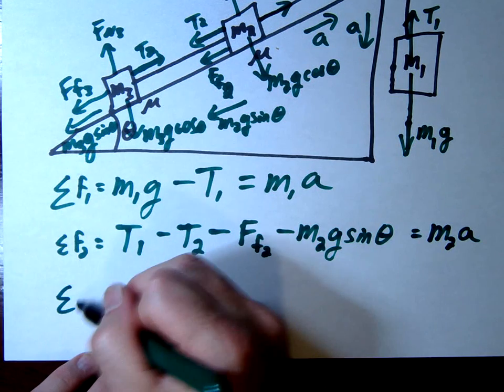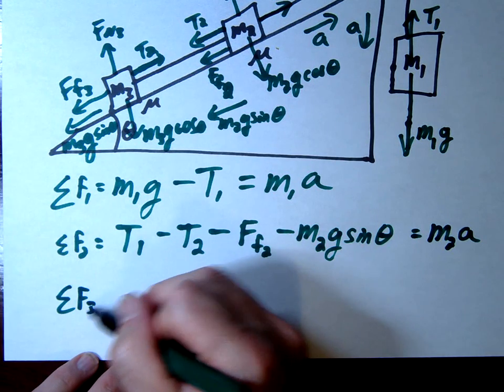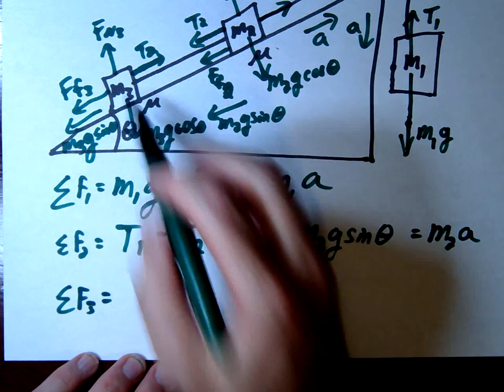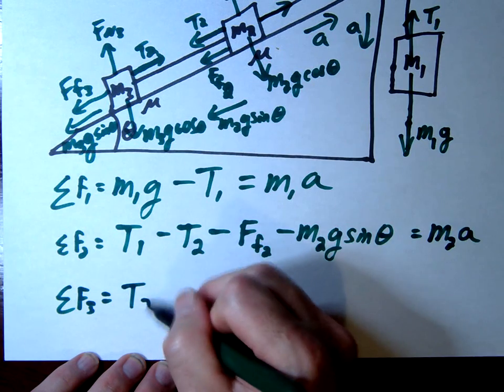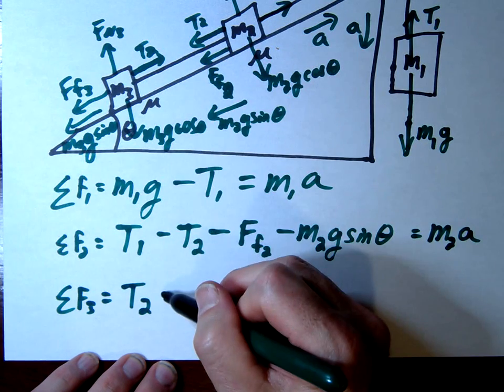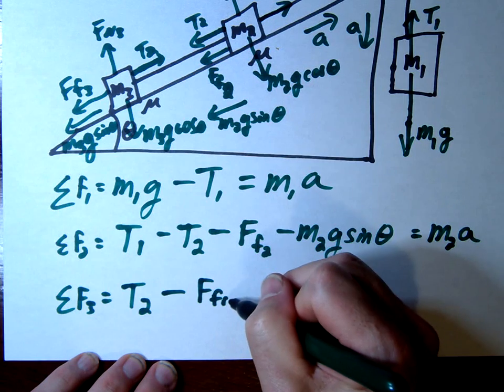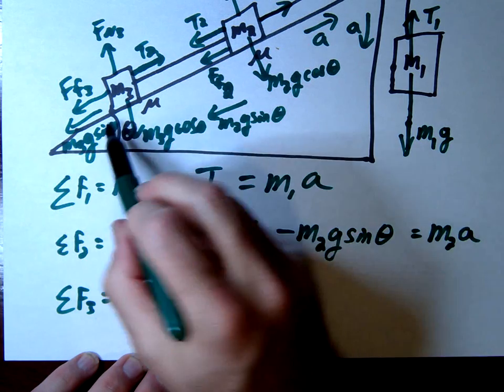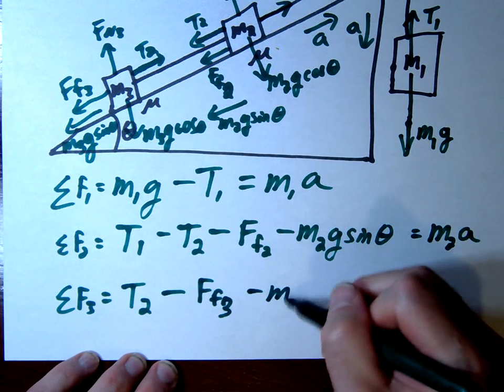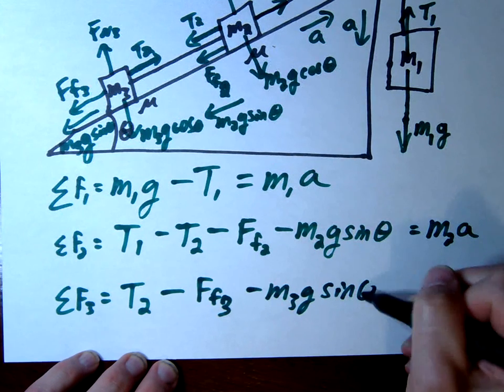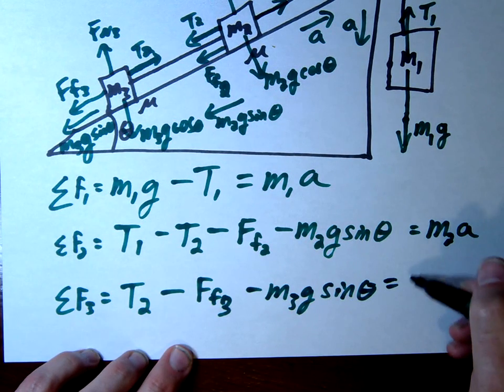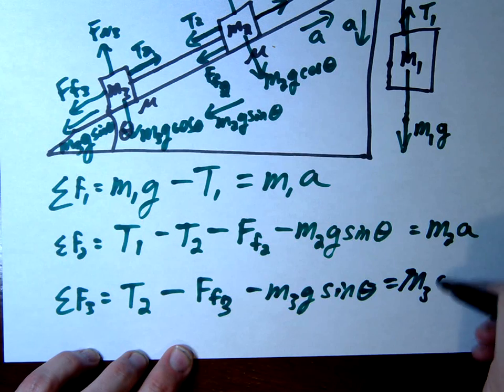And then lastly we're going to do F3. That's going to be T2 going up minus F friction 3 going down minus M3G sine theta. That's going to equal M3A.